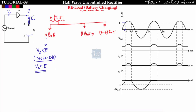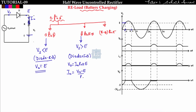So output voltage V_naught is equal to E, the battery EMF. From theta to pi minus theta, the supply voltage is greater than E, so the diode will be forward biased — short circuited. Output voltage equals i_naught times R plus E, so i_naught equals (V_naught minus E) divided by R in the interval theta to pi minus theta.